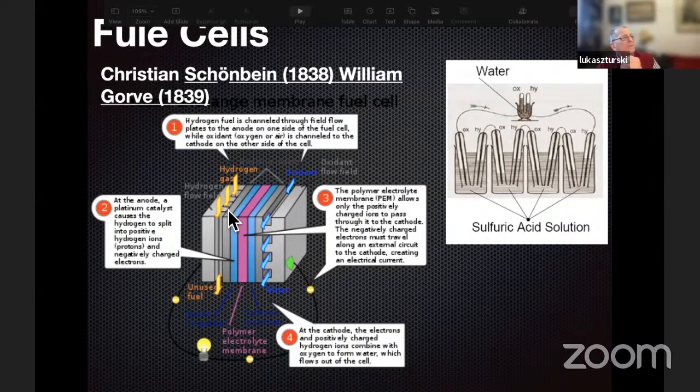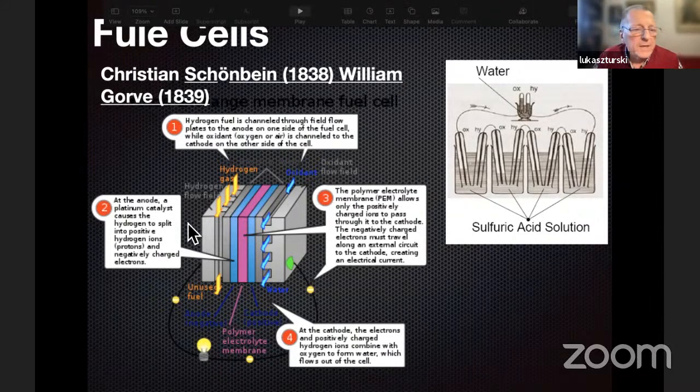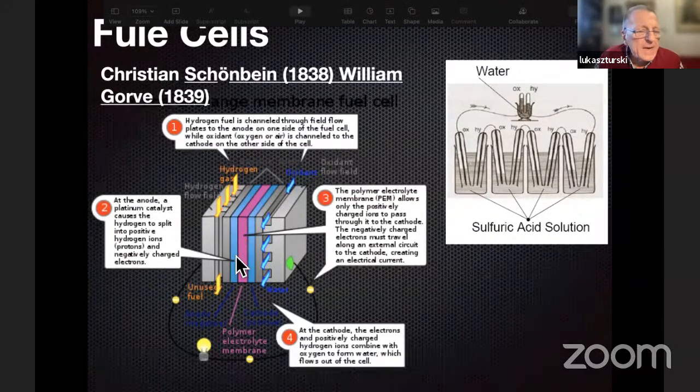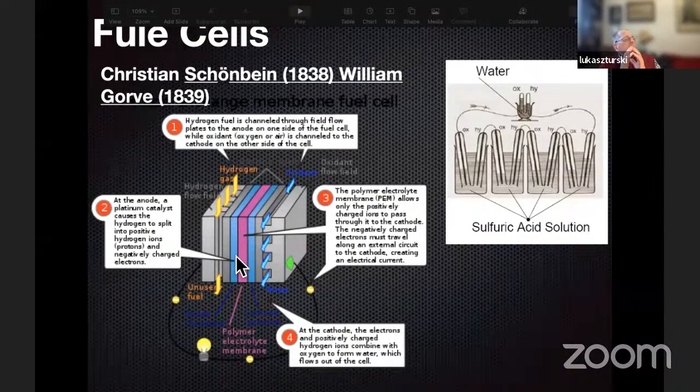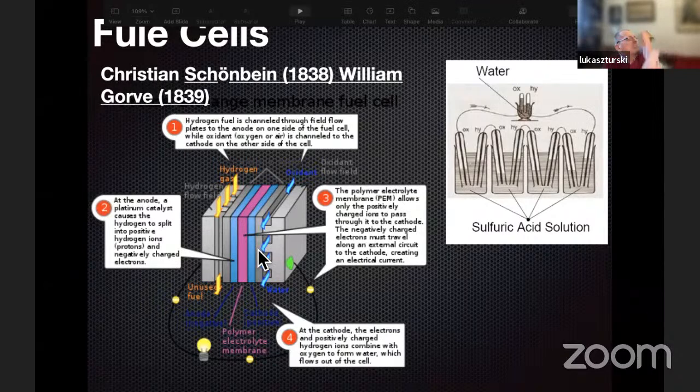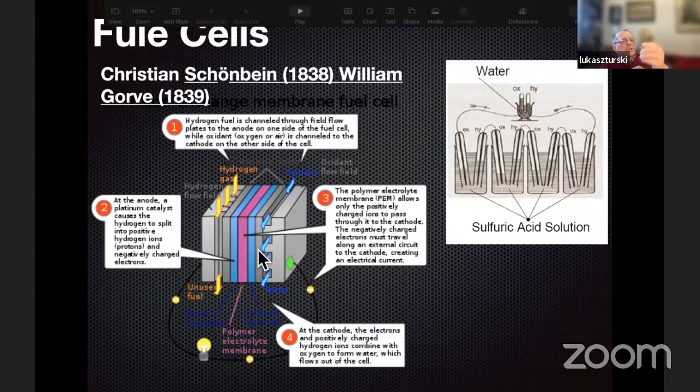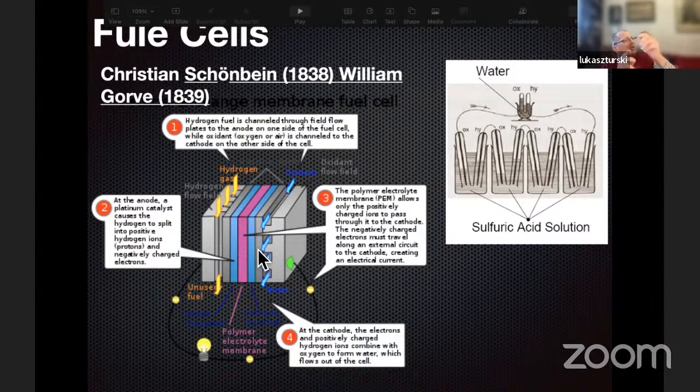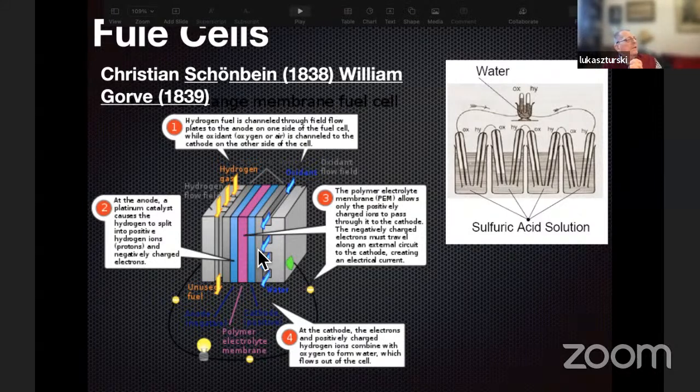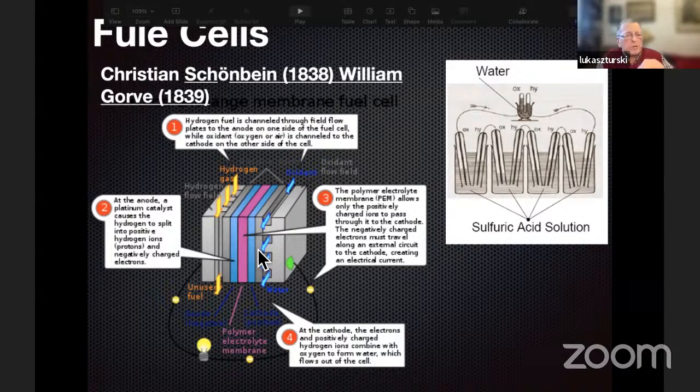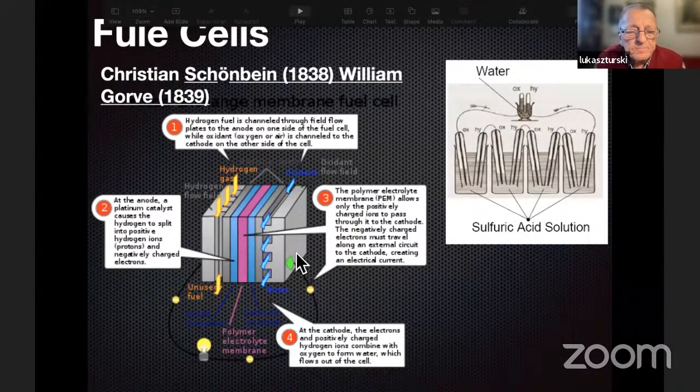The device which is called the fuel cell has been invented in 1838, independently by two engineers, Christian Schoenbein and William Grove. What is the fuel cell? That is a schematic of how it works. You have a device which has, as in a battery, cathode and anode, right?